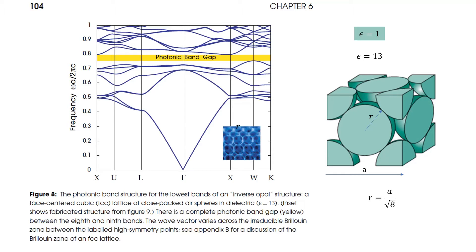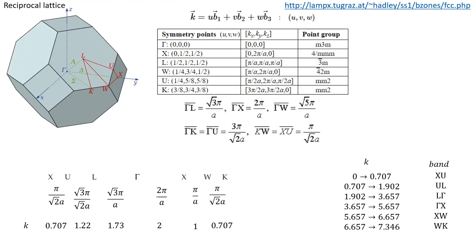For this particular choice of r equals a divided by square root of 8, the spheres as you see are touching. But actually in COMSOL I will not model it like this because it will take very long time, so I will choose a smaller value of r, multiplying this value by some factor like 0.95.